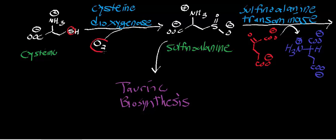So both atoms of molecular oxygen are going to get incorporated into the cysteine molecule on the sulfur atom. And what that generates is this molecule right here, which is called sulfenoalanine.